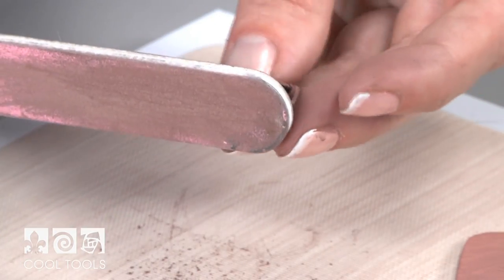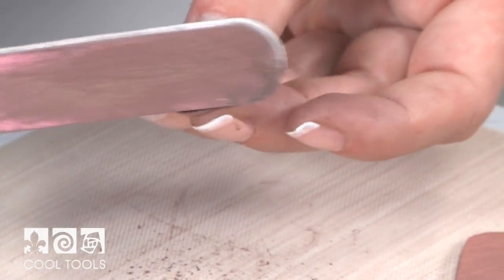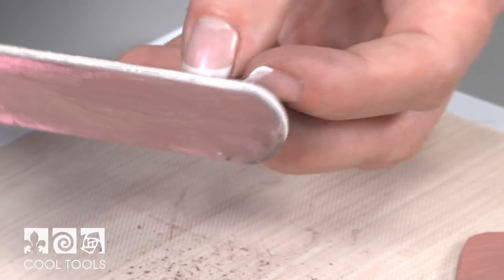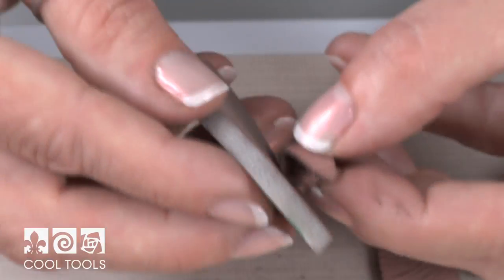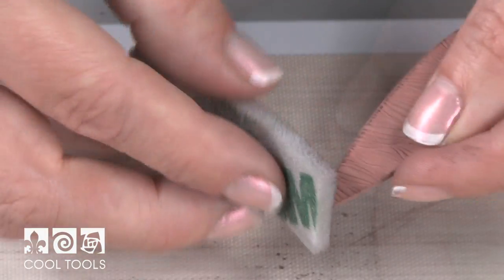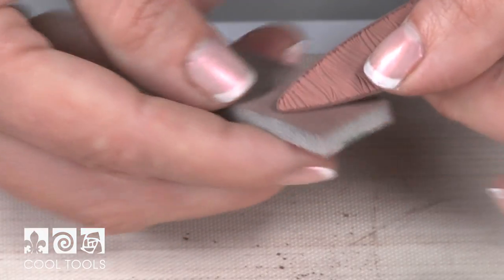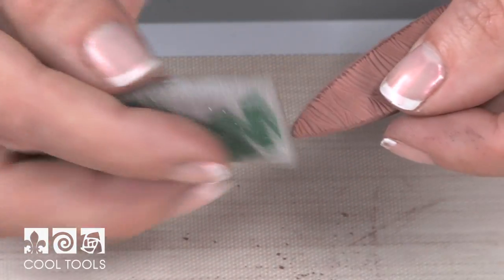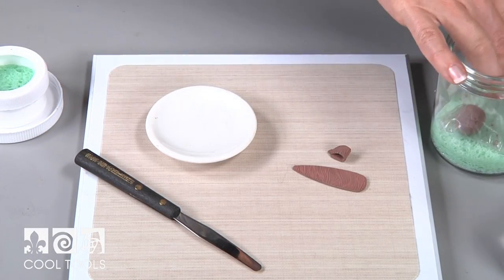I make final touches with a 3M ultra fine sanding pad, which works great as they are flexible and can be cut into any shape. Don't forget to sand the back of the pendant.